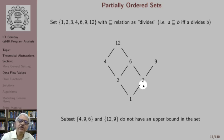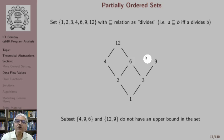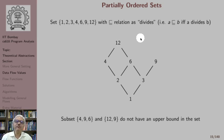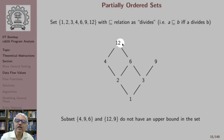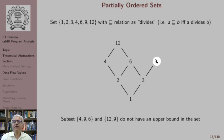Now, is this partially ordered set a lattice? The answer is no, because the subset {4, 6, 9} does not have an upper bound in the set — there is no element in the set that 4, 6, and 9 all divide. Similarly, the subset {12, 9} has no upper bound — there is no number within the set that is divisible by both 12 and 9. So this is an example of a partially ordered set which is not a lattice.